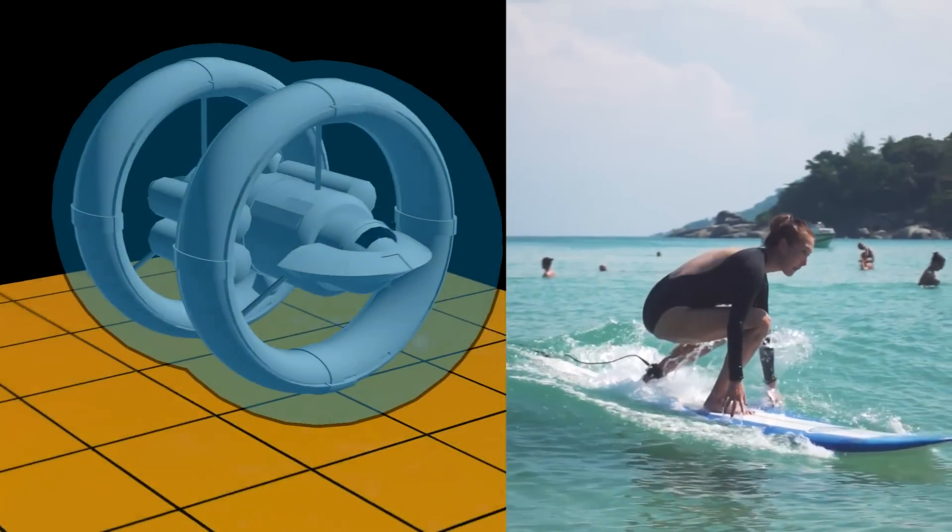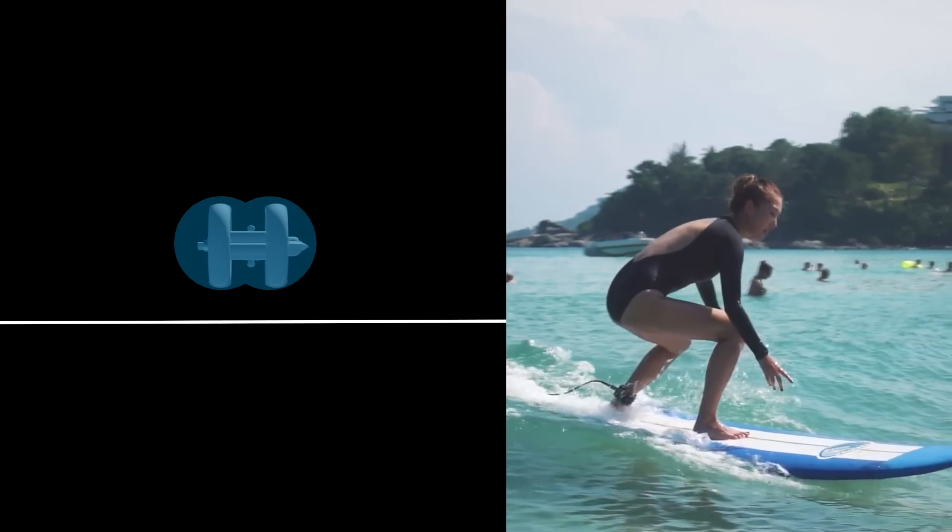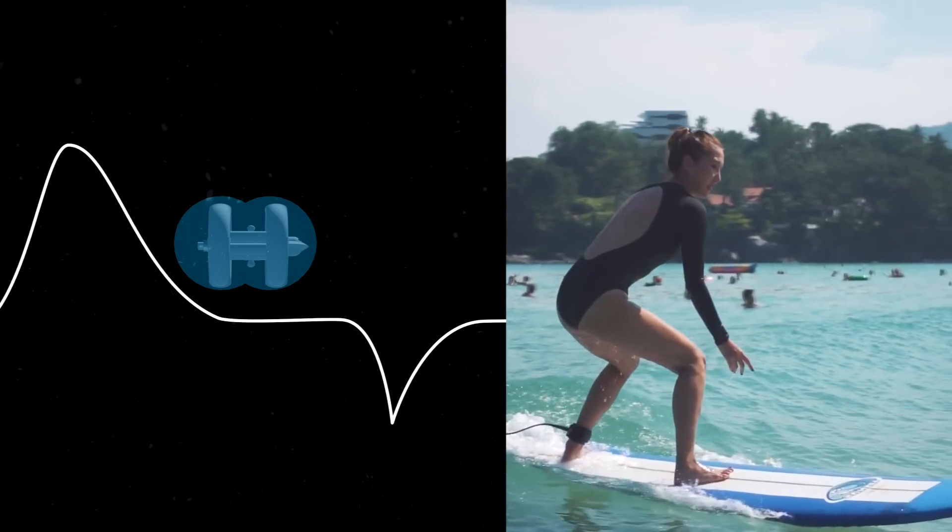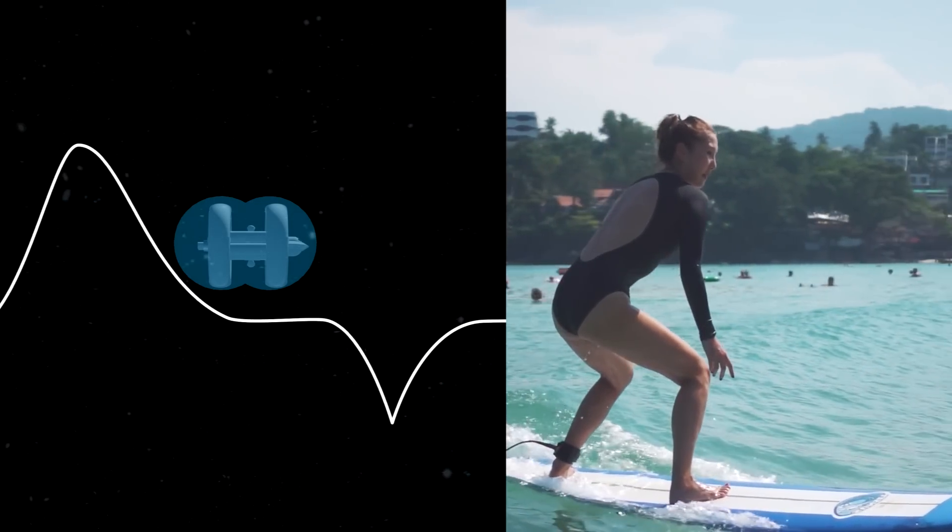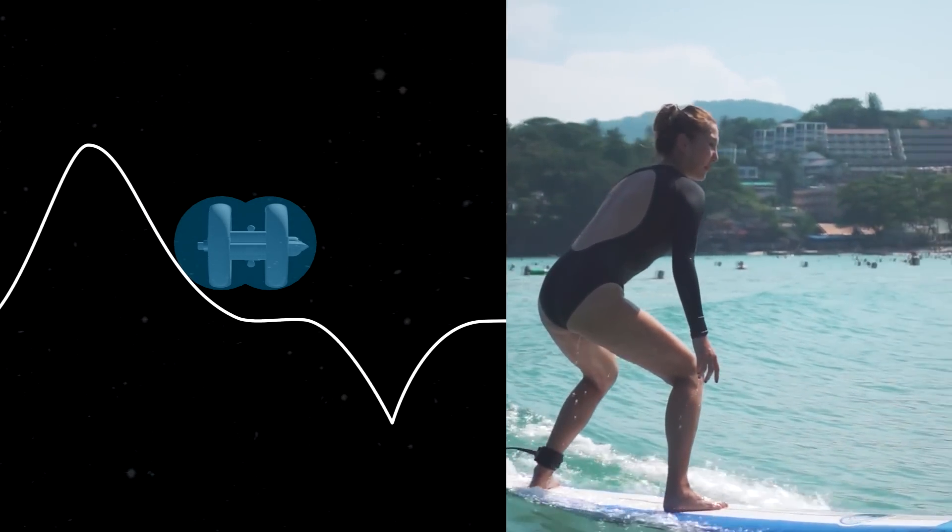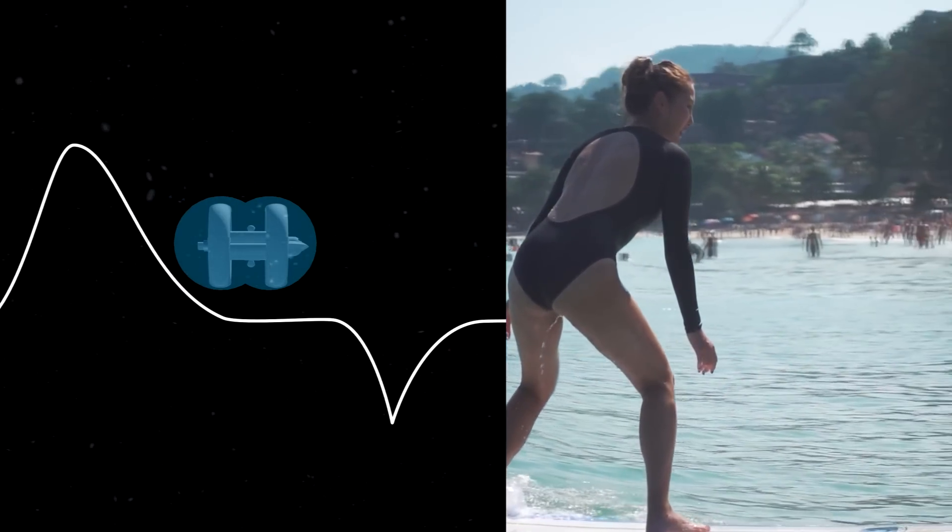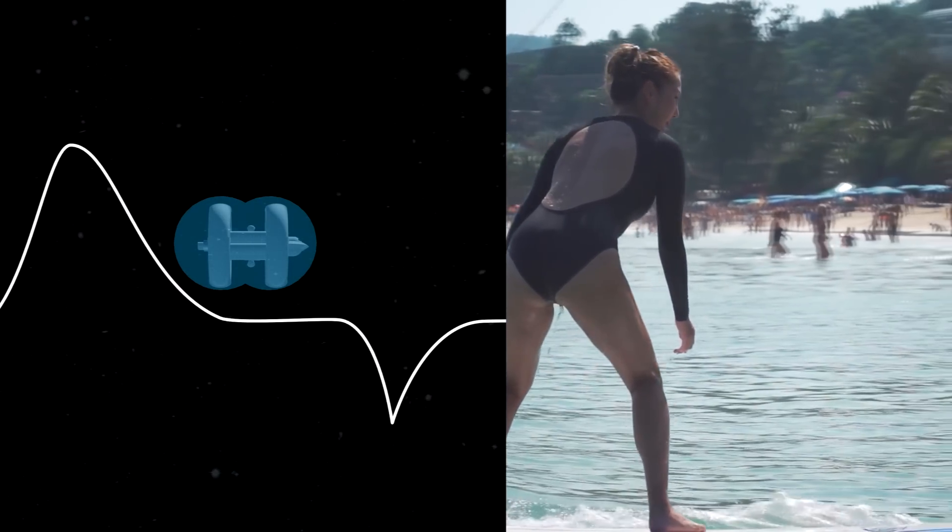Alcubierre's warp drive creates a kind of bubble around the ship, which is like the surfboard. The ship sits within the bubble, analogous to you standing on the surfboard. Your ship does not move within the bubble itself, so Einstein's laws are not violated. But the bubble of space is moving or carried by a kind of wave that is being created in space.